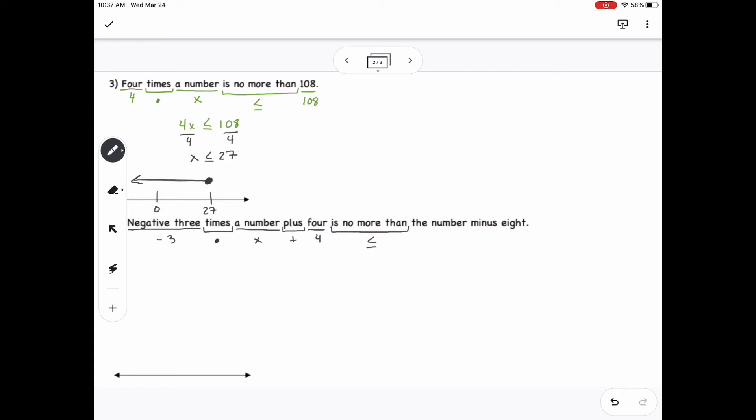Now here, when they say the number, they're still talking about the same variable you've already used. So this is x in this case. So just remember it's the same variable. If they said another number, that's when you would pick a different variable, but here it's just referring back to the same one. So then I have x minus 8 at the end, so negative 3x plus 4 less than or equal to x minus 8 will be our inequality for this one.